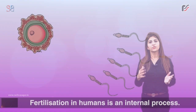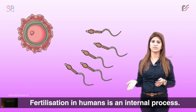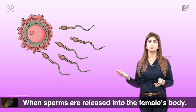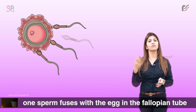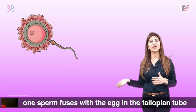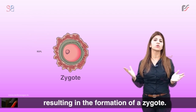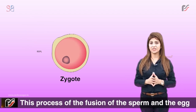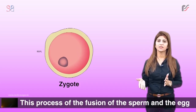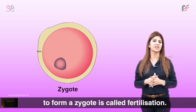Fertilization in humans is an internal process. When sperms are released into the female's body, one sperm fuses with the egg in the fallopian tube, resulting in the formation of a zygote. This process of fusion of the sperm and the egg to form a zygote is called fertilization.